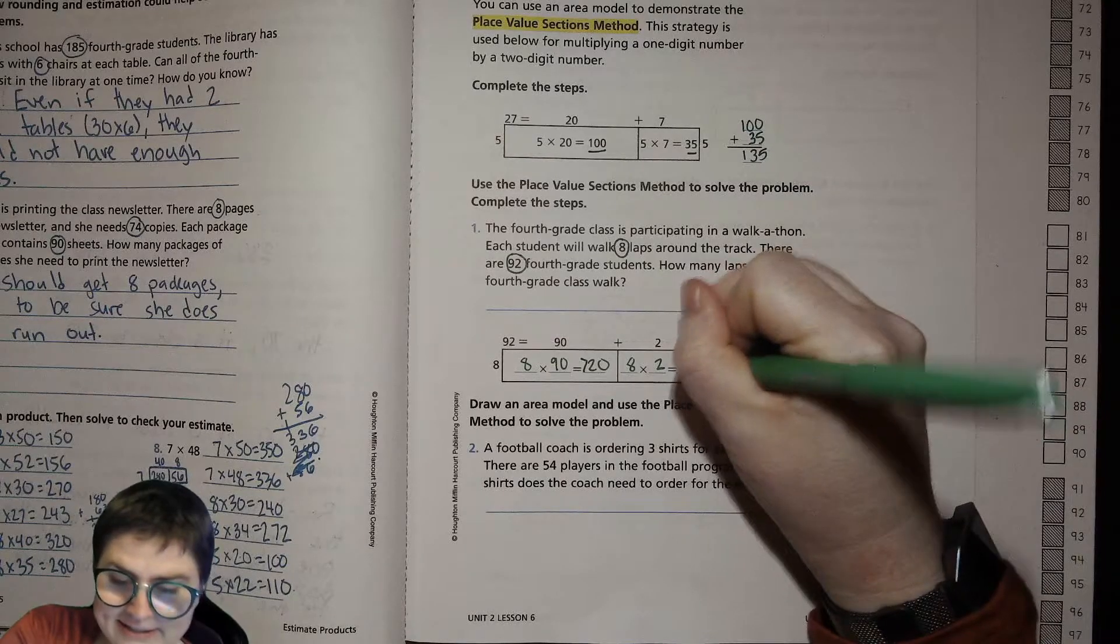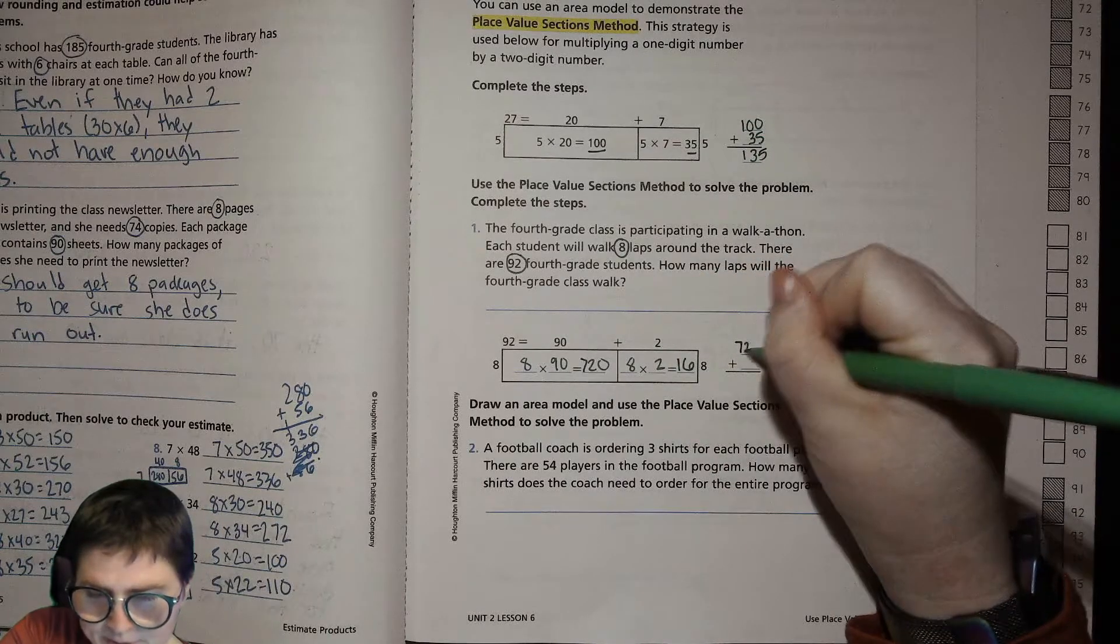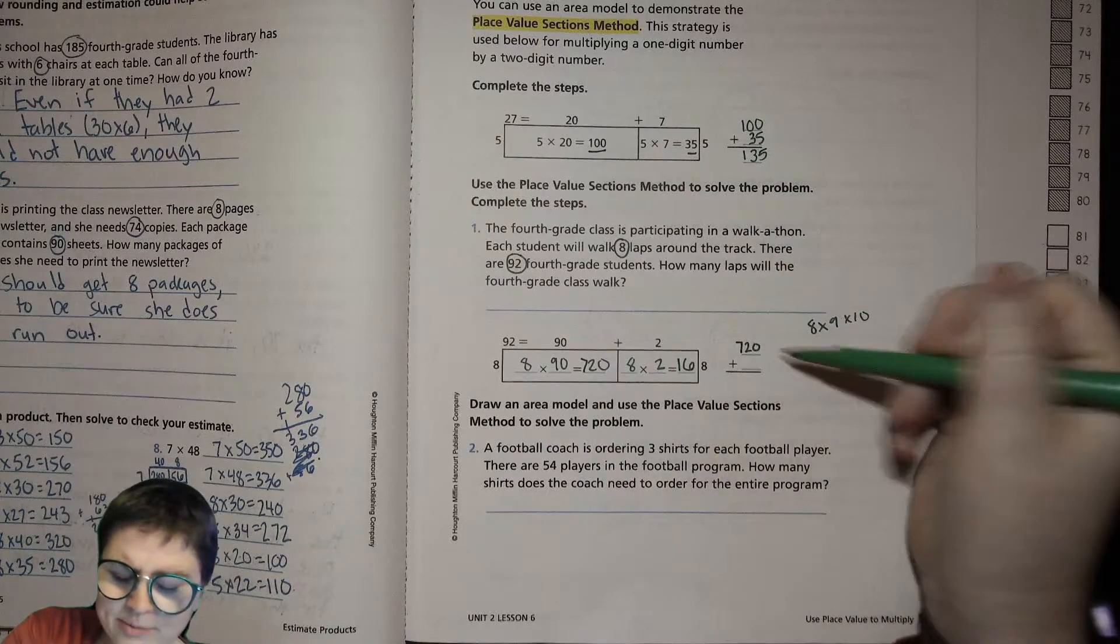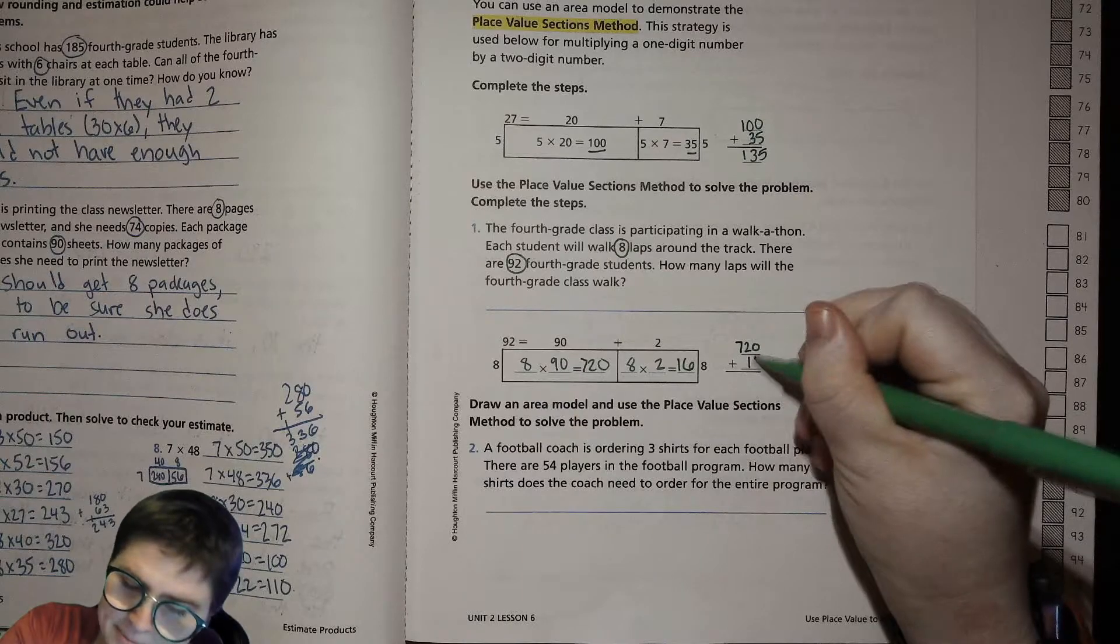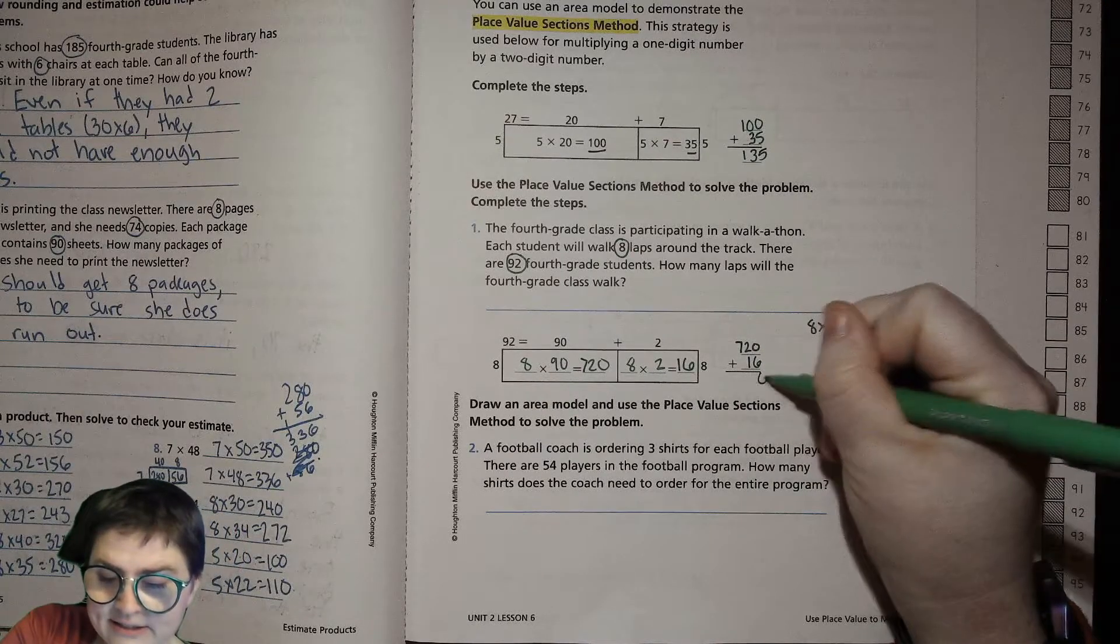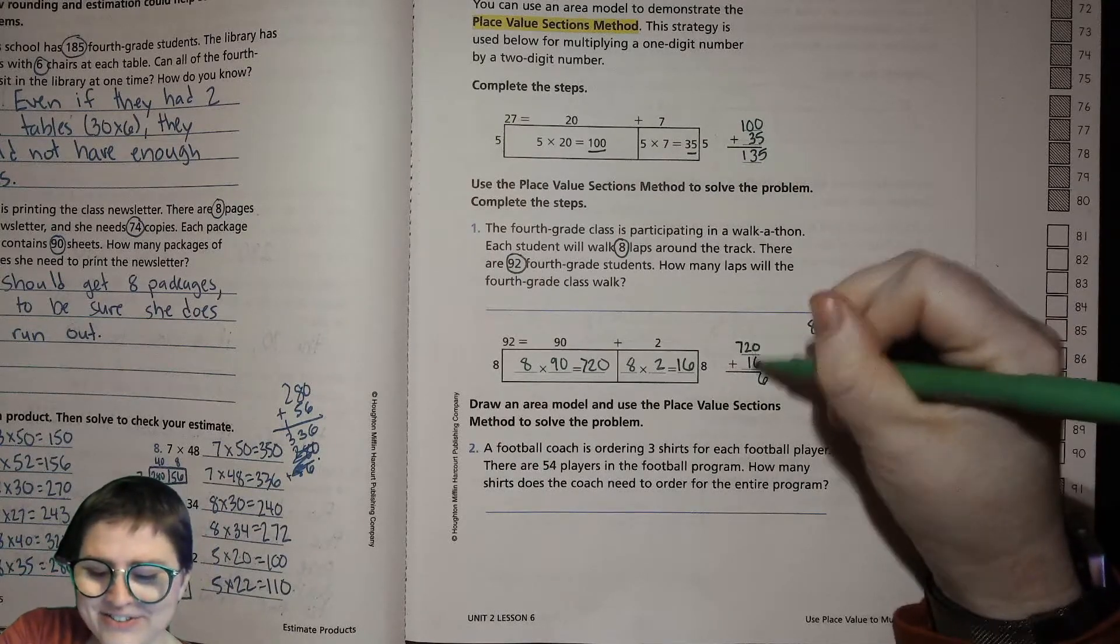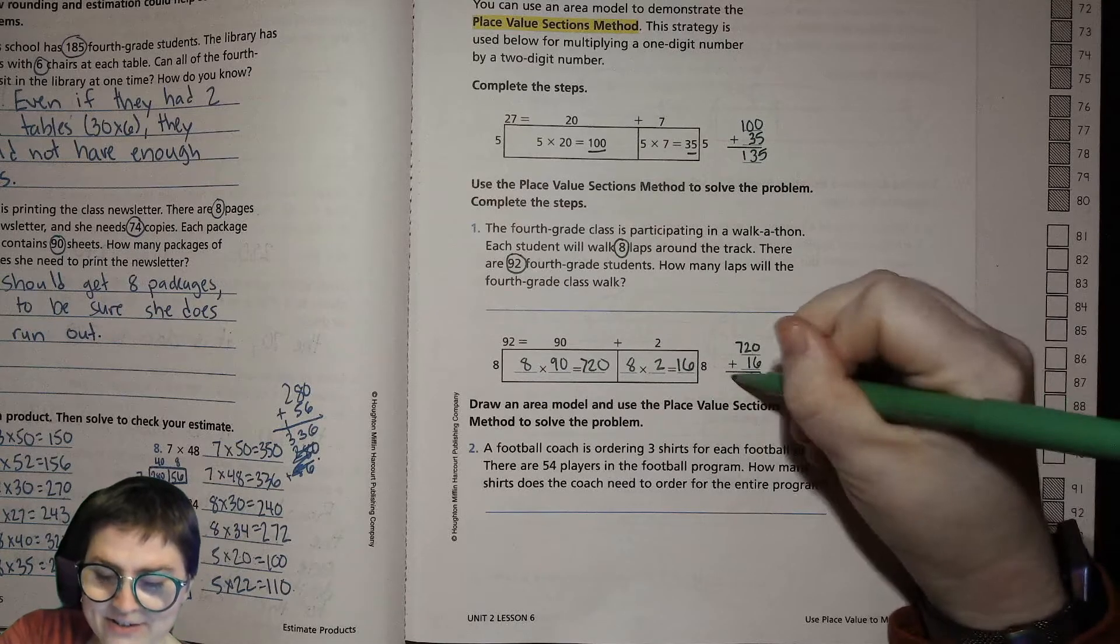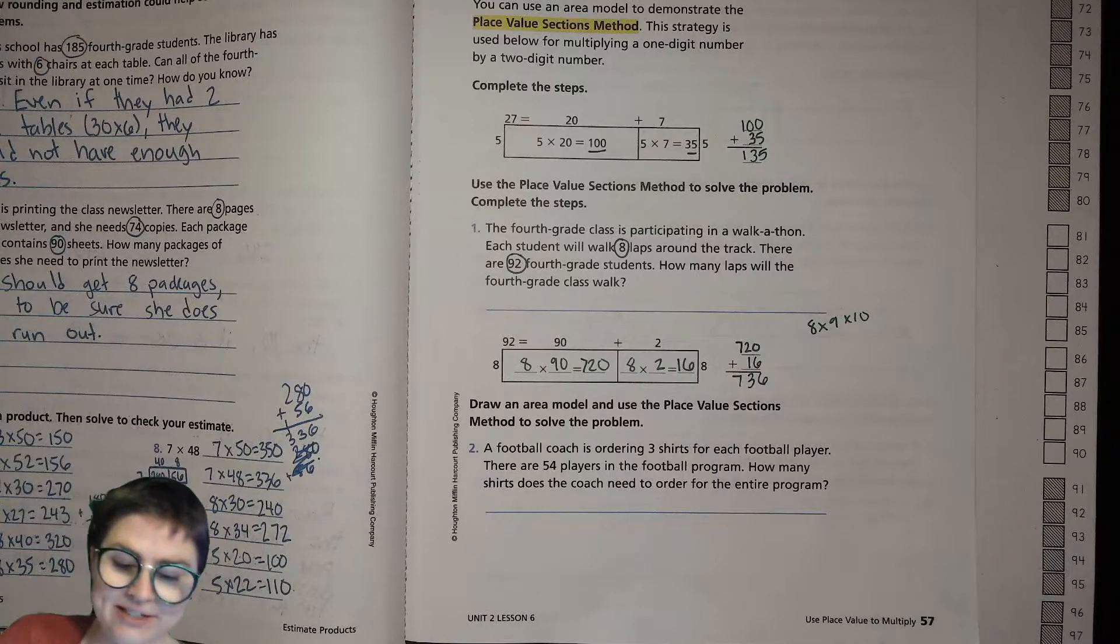Then all we have to do is add those up, so 720 is this product we're putting over there, and this one we put underneath, lining up our place value of course. Zero plus 6 is 6, 2 tens plus 1 ten is 3 tens, and 7 hundred. Now we just solved that problem using our model!